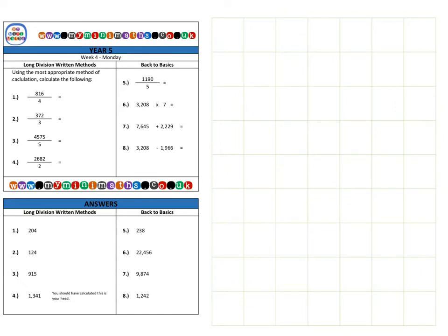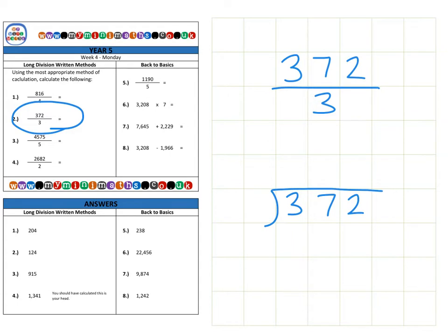Next we're on to question two, which is 372, and I'm dividing that by three. So if I place that into my short formal written method down here, that's 372, and I'm going to divide that by three. So how many threes fit into three? Well that's one. How many threes fit into seven? Well two times three is six, three times three is nine, so that's too big.